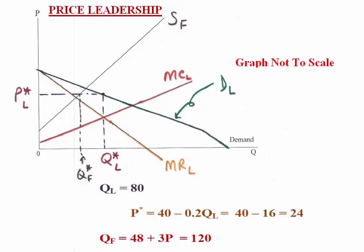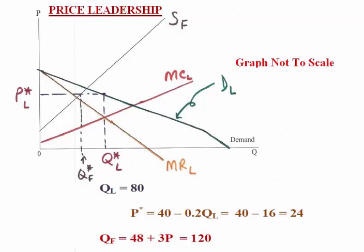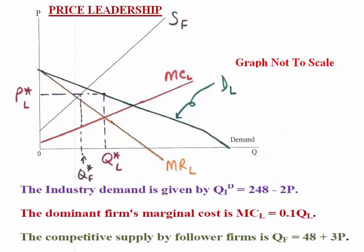So the leader is supplying 80. If we plug the price of 24 back into the original demand curve, we have 248 − 2(24) = 248 − 48 = 200. So the total quantity originally demanded by the industry is 200, which equals 80 from the leader plus 120 from the followers — confirming the equilibrium.